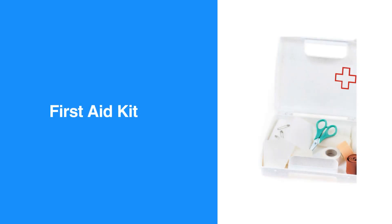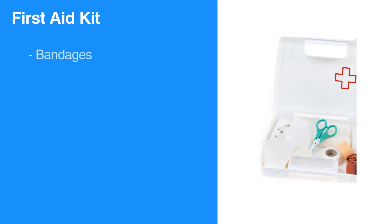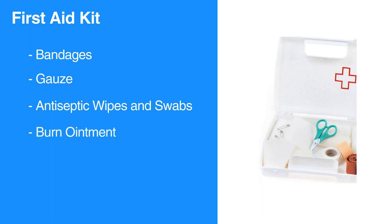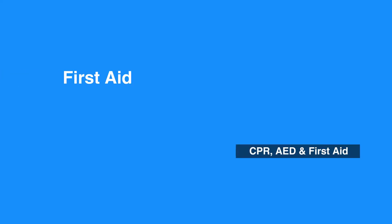Now let's discuss the first aid kit. You can purchase a commercially available first aid kit or make your own. Common items found in a first aid kit include bandages, gauze, antiseptic wipes and swabs, burn ointment, eye shield and eye wash, and a first aid reference guide that includes local phone numbers. For a more detailed list, please refer to the manual. This concludes our lesson on first aid. Next, we will review breathing problems.